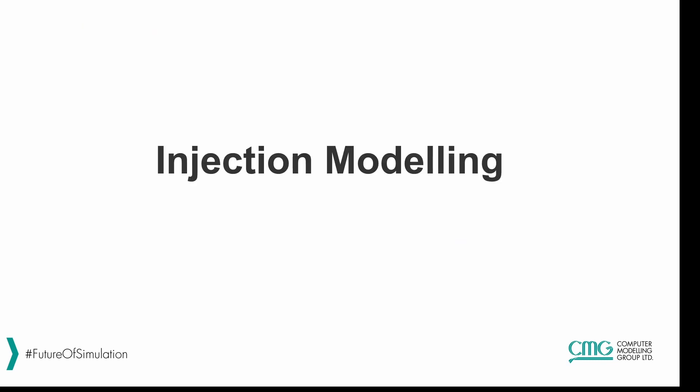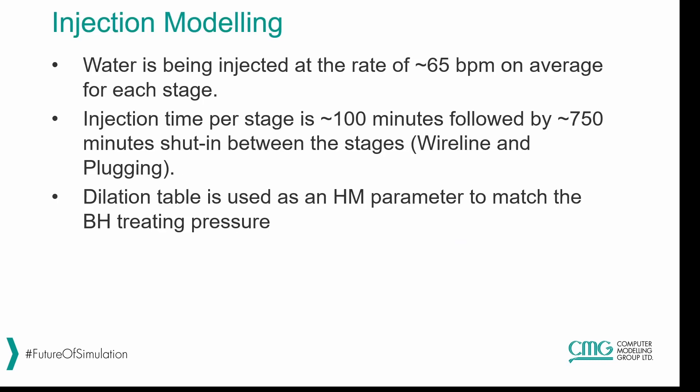Now we will talk about the injection modeling. Water is injected at a rate of 65 barrels per minute on average for each stage, and the injection time per stage is about 100 minutes, followed by a 750-minute shut-in period between stages for wire line and plugging. The dilation table is used as the history match parameter to match the bottom hole treating pressure.